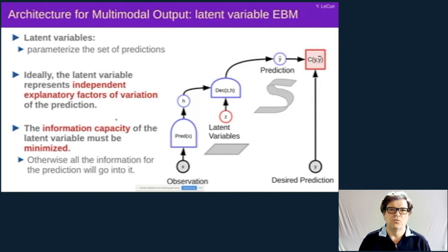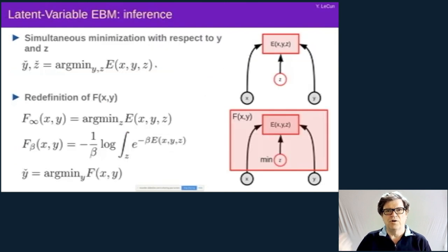So one way to handle multiple outputs is through the use of a latent variable. So if we're going to build our machine out of deterministic functions, the way to allow a machine to produce multiple outputs for a single input is to parameterize the set of outputs through a latent variable. So the typical architecture would look something like this. You have an x variable that goes through a predictor that extracts a representation of that x variable, and that representation together with a latent variable goes through a decoder, which produces the prediction. When you vary the latent variable over a set, it makes the prediction vary over a set of similar dimension. And the trick, of course, is to find, build a machine and train it in such a way that the latent variable represents independent explanatory factors of variation of the output. The information capacity of this latent variable must be minimized or regularized, and this is a main issue that I will discuss later.